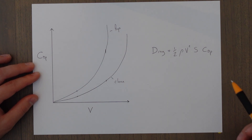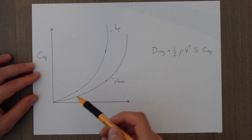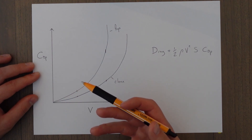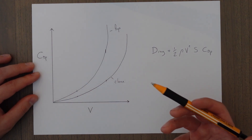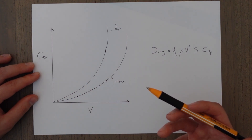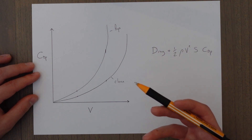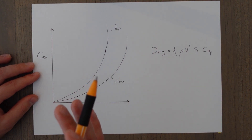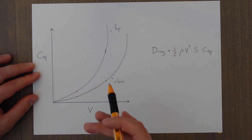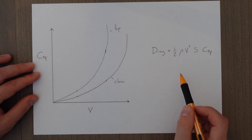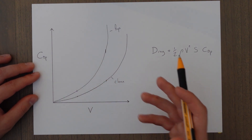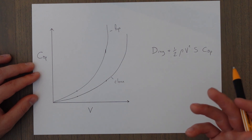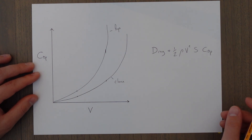In order to reduce parasitic drag we can just travel slower, or on the design side of things we avoid rough surfaces to reduce skin friction drag, and we avoid sharp changes in direction and add in filleting to smooth out those flow changes and interference drag.